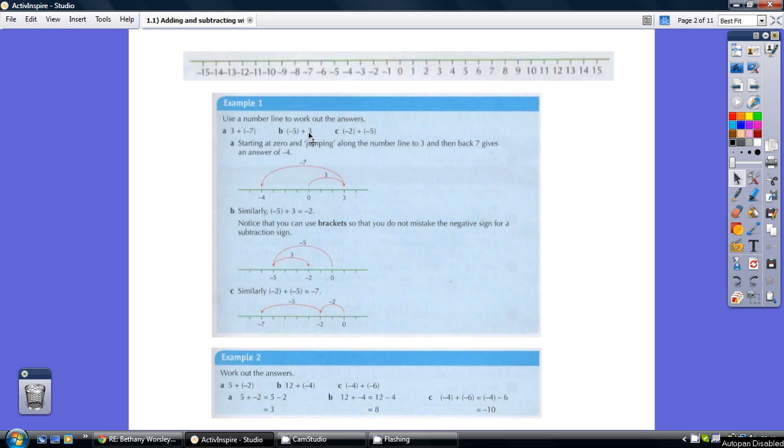The second one, example B, minus 5 add 3. So start on the first one, start on minus 5, add on 3: 1, 2, 3, takes us to minus 2.